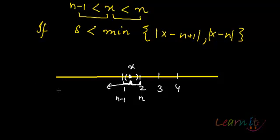this distance is basically x minus (n minus 1) and this distance is basically n minus x. If I take delta which is smaller than this,